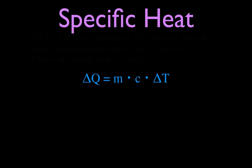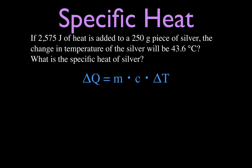Okay, let's do one more where we calculate the specific heat. Now, we have a piece of silver which has a mass of 250 grams. We're going to add 2,575 joules of heat to that piece of silver. And that will change its temperature by 43.6 degrees. And we want to know what is the specific heat, therefore, of that piece of silver.